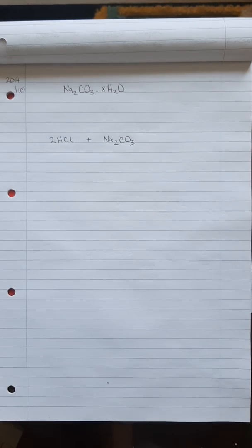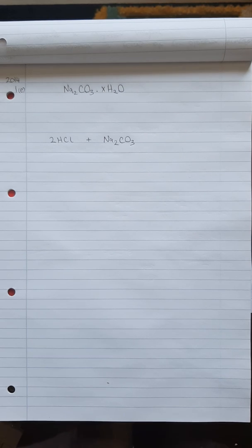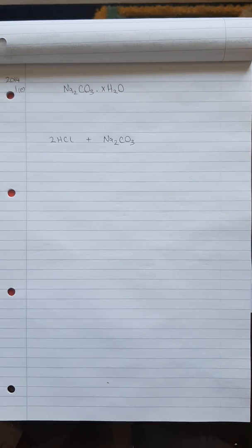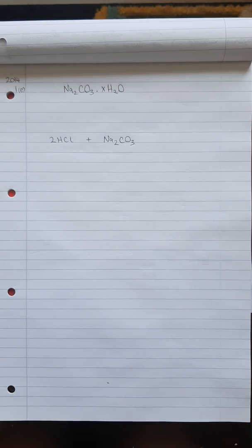I'm going to have a look at a titration question. This is question one of the exam paper in section A, the first question that you probably do in an exam. It is an experiment question. The titration question is always number one, and there are about seven or eight titrations — one comes up every year. You have to do two of the three experiments from section A, and most people do question one titration. This titration looks at the washing soda.